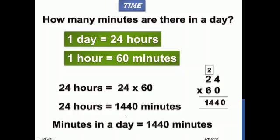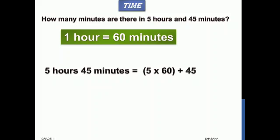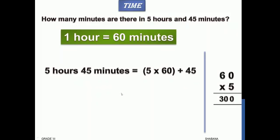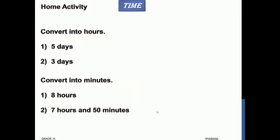How many minutes are there in five hours and 45 minutes? One hour is equals to 60 minutes. So to find minutes, we have to multiply the hours by 60. The 45 minutes are already in minutes form, so we need not multiply 45 by 60 — we just multiply 5 by 60, then add 45. So 60 multiplied by 5: 5 into 0 is 0, and 5 sixes are 30, so 300. Then 300 plus 45 equals 345. So 5 hours 45 minutes is equals to 345 minutes.